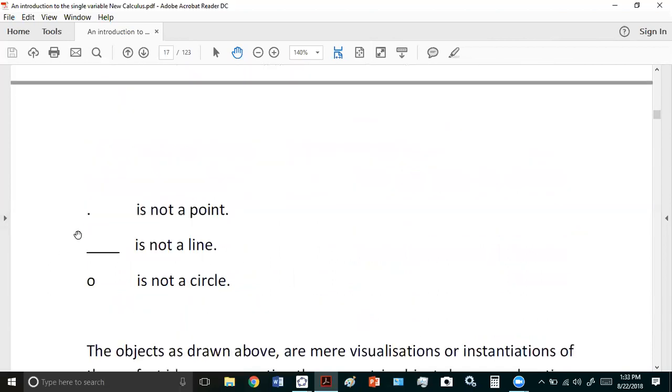For example, this little point or dot you see here is not a point. It's just a visualization of the idea of location. In other words, where is it? It's here, or it's here, or it's here. So it just denotes a location. It's not a point because a point is the concept of location.